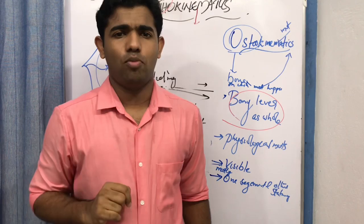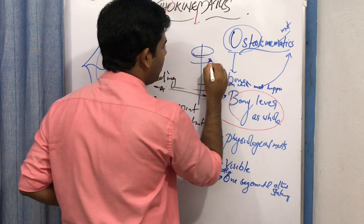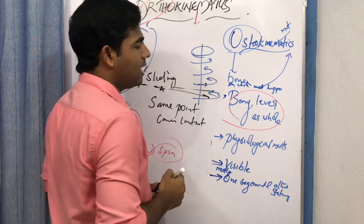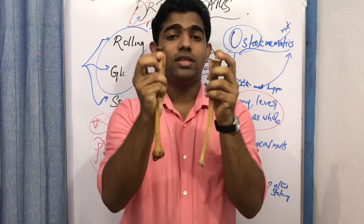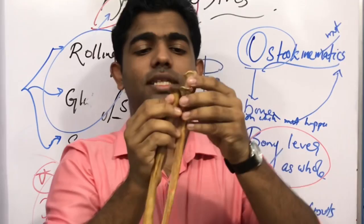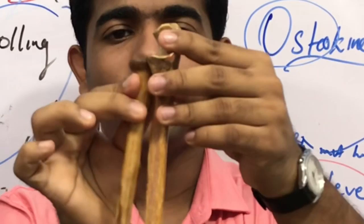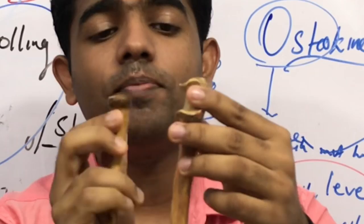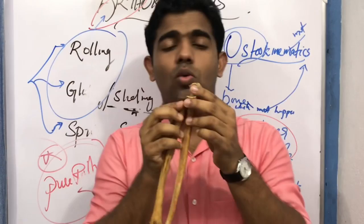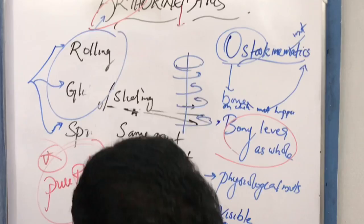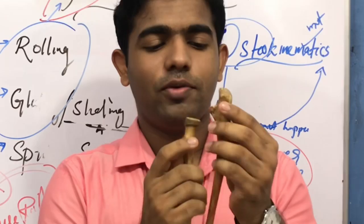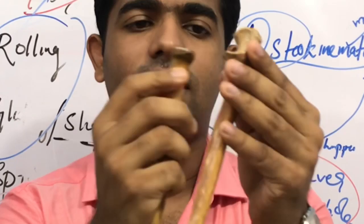Spinning is a movement around a particular point or axis. When movement happens around a fixed axis, that is known as the spinning movement. A simple example is the radial head movement — with the annular ligament attached around it, during pronation and supination the radial head spins on the radial notch of the ulna.